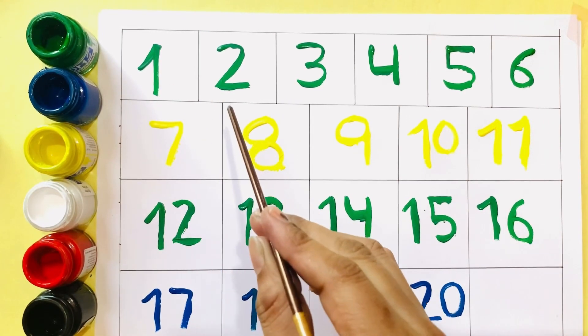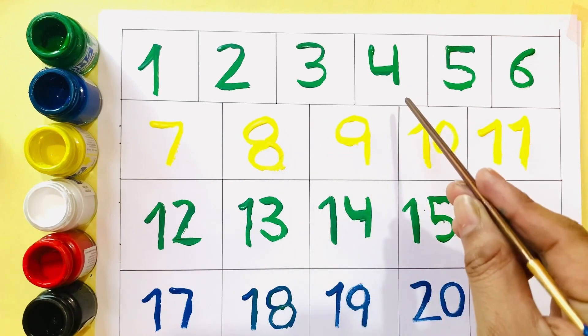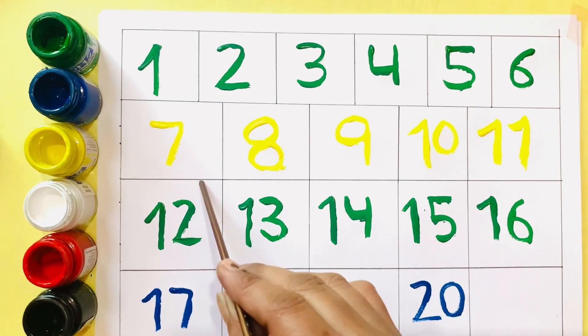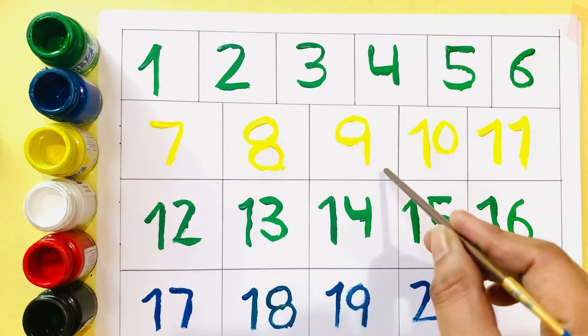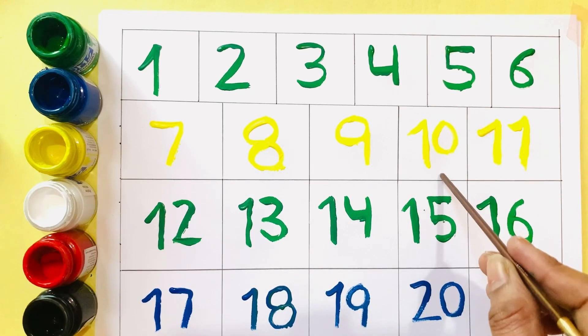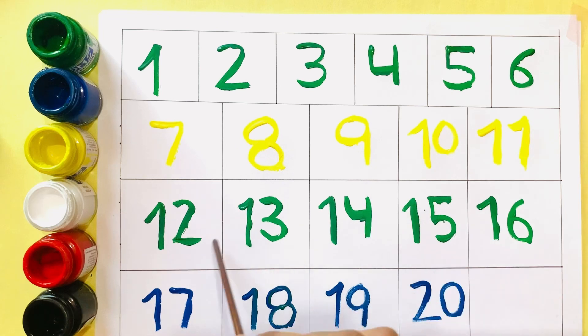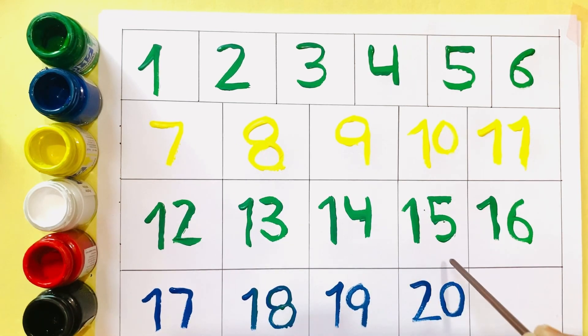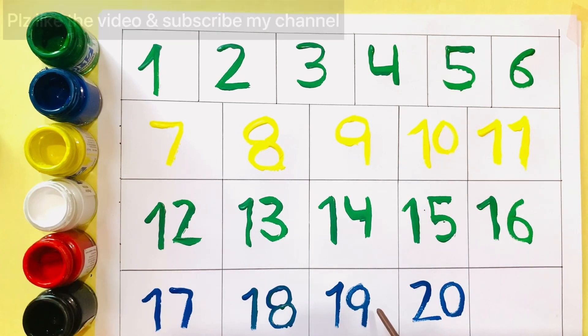One, two, three, four, five, six, seven, eight, nine, ten, eleven, twelve, thirteen, fourteen, fifteen, sixteen, seventeen, eighteen, nineteen, twenty.